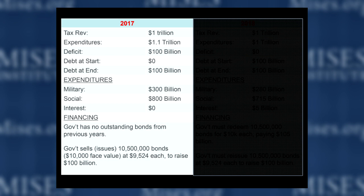Now, how did that one point one trillion in expenditures break down? I'll say they spent three hundred billion dollars on their military and eight hundred billion on social spending. That adds up to one point one trillion. The interest for this year on the government debt is zero, because we assumed they started out without any debt.